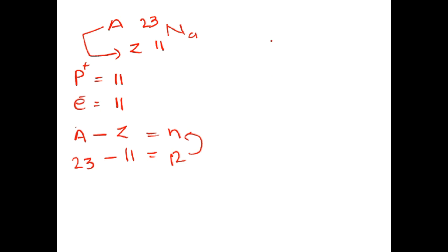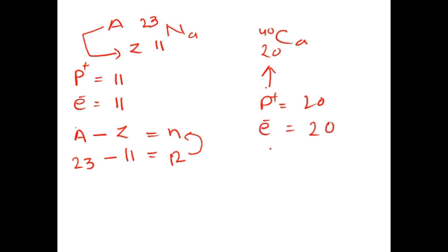Similarly, for calcium: its atomic number is 20 and atomic mass is 40. So protons equal 20, electrons equal 20. For neutrons: A minus Z equals 40 minus 20, which equals 20. So calcium has 20 neutrons.